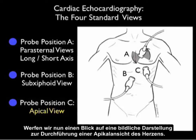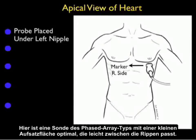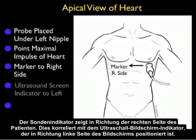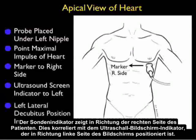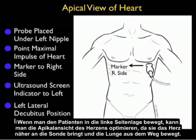Now let's take a look at a pictorial showing how to perform the apical view of the heart. Preferably, you're going to be using a small footprint phased array type probe that can easily get in between the ribs. Position the probe directly underneath the left nipple at about the point of maximal impulse of the heart, with the probe indicator over towards the patient's right side. Moving the patient into the left lateral decubitus position can improve imaging as it moves the heart closer to the probe and moves the lung out of the way.